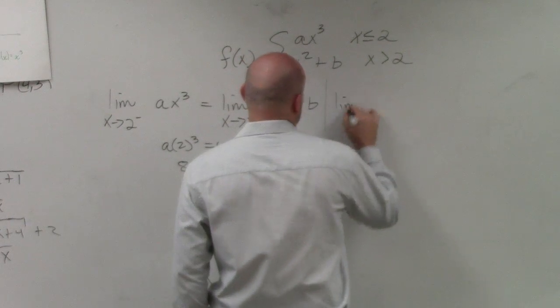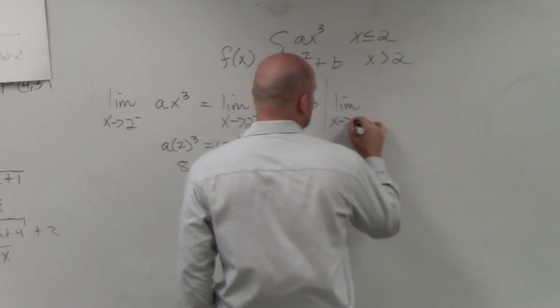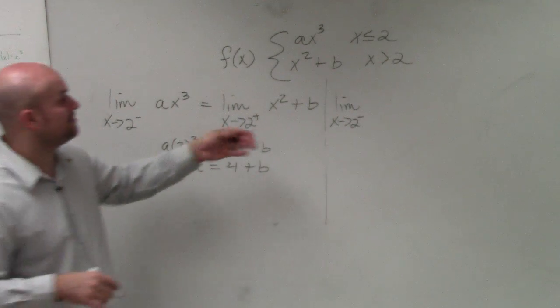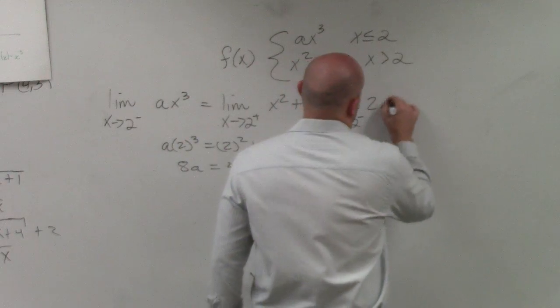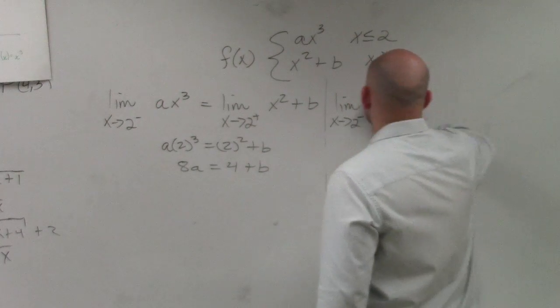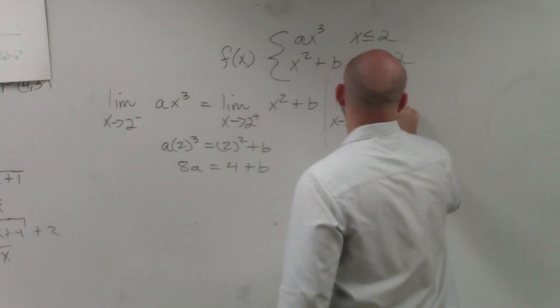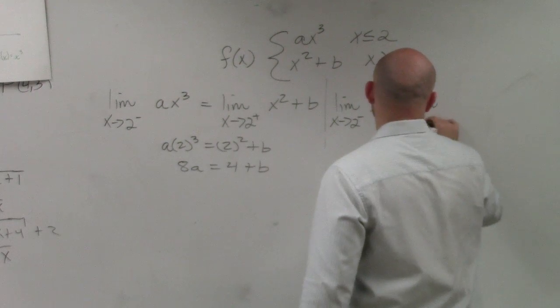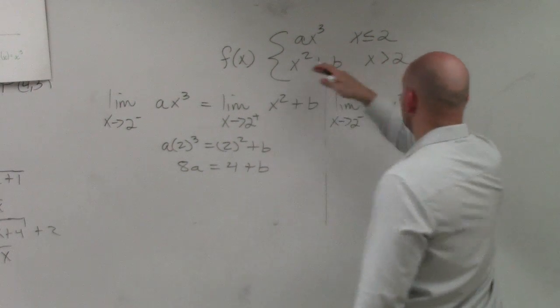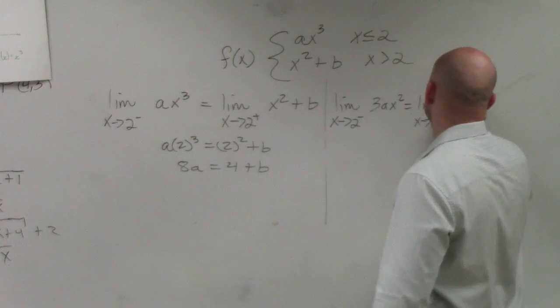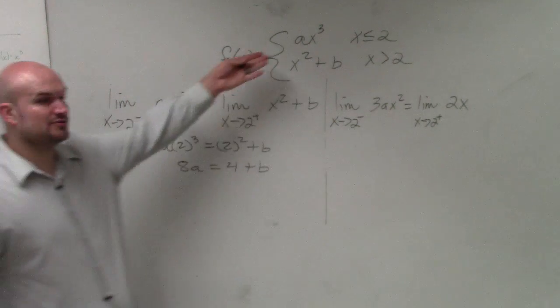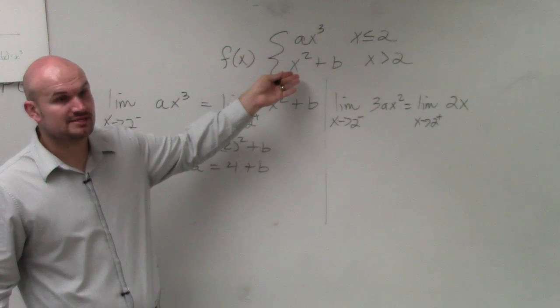And I'll just use the limit because we're going to use left and right hand limits. So now, I'm going to check the limit from left hand side, but I'm going to take the derivative. Sorry, from the left hand side, that's going to be 3ax squared has to equal the limit as x approaches 2 from the positive, which is equal to 2x. Does everybody see? So now, I just took the derivative of each function.